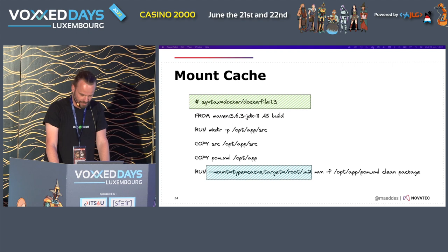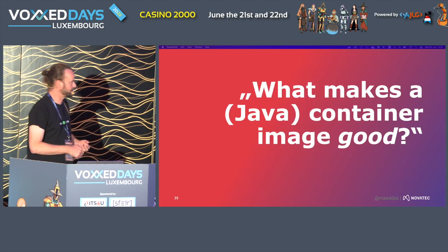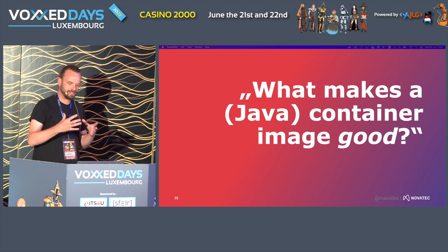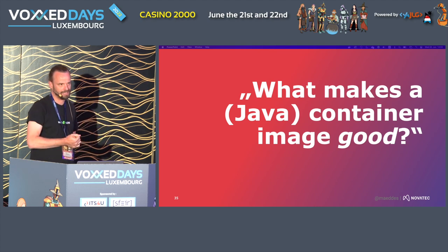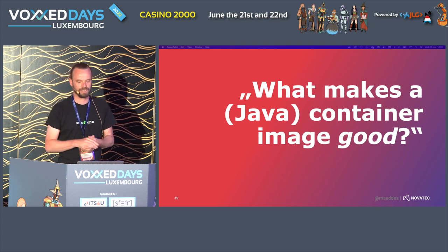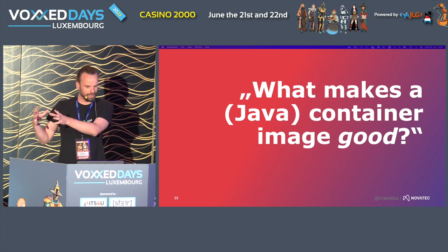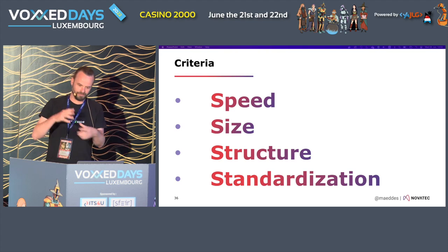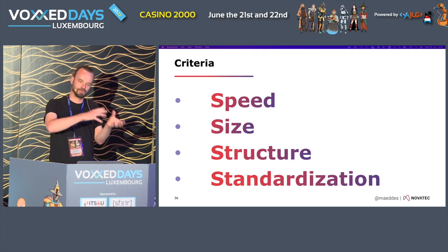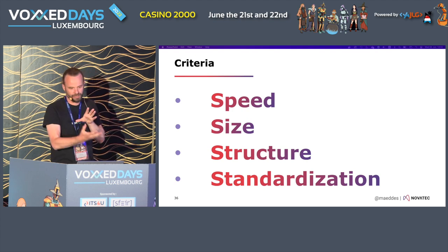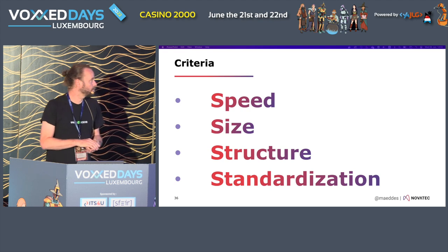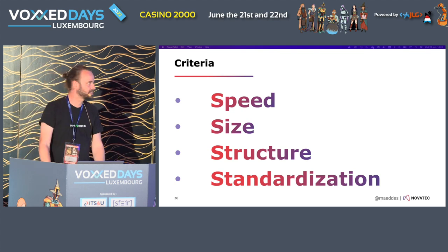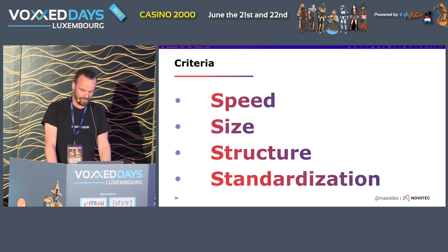We still haven't answered what the best Java base image is, but we're getting an understanding of what makes a container image good. The criteria are: speed - fast image builds; size - having them small so they can be loaded quickly; structuring with layers; a high degree of standardization; and obviously security, which is also an important factor. All of those things I can tweak and turn to make my container image better.